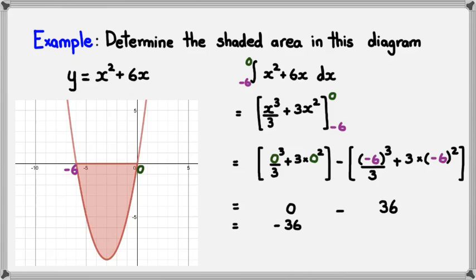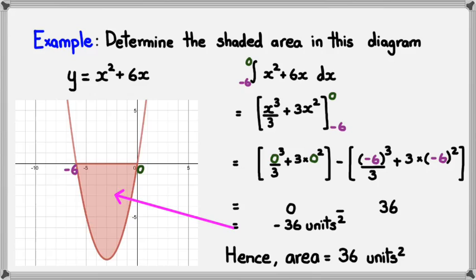So, this actually won't be negative 36. It should actually be positive 36, but the reason we get negative 36 is because it's under the X axis. So, we actually say the area is equal to 36 units squared.